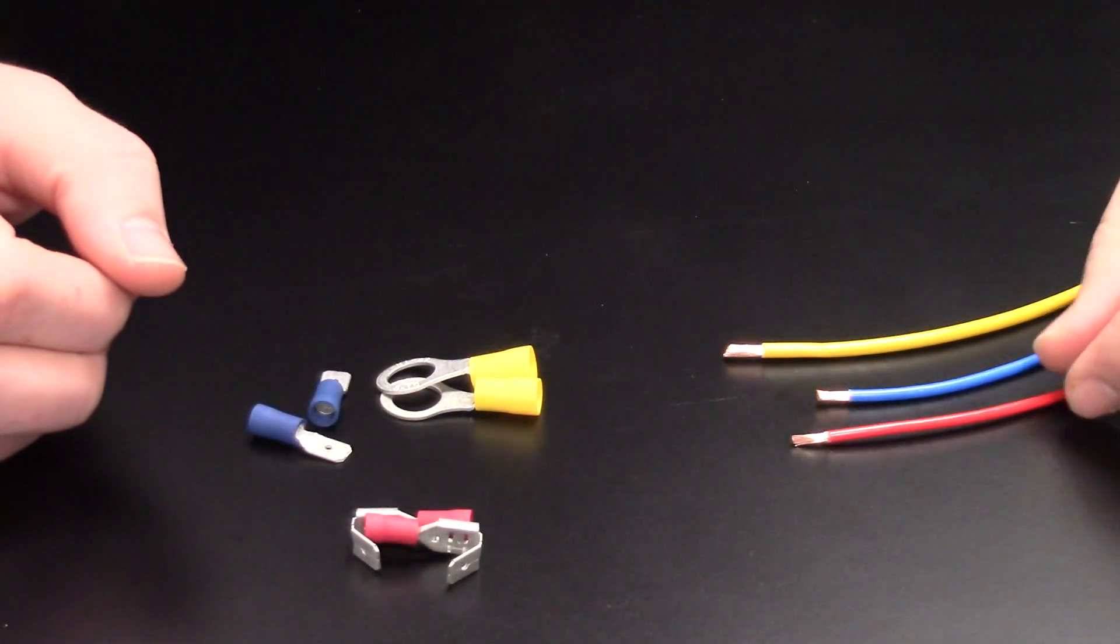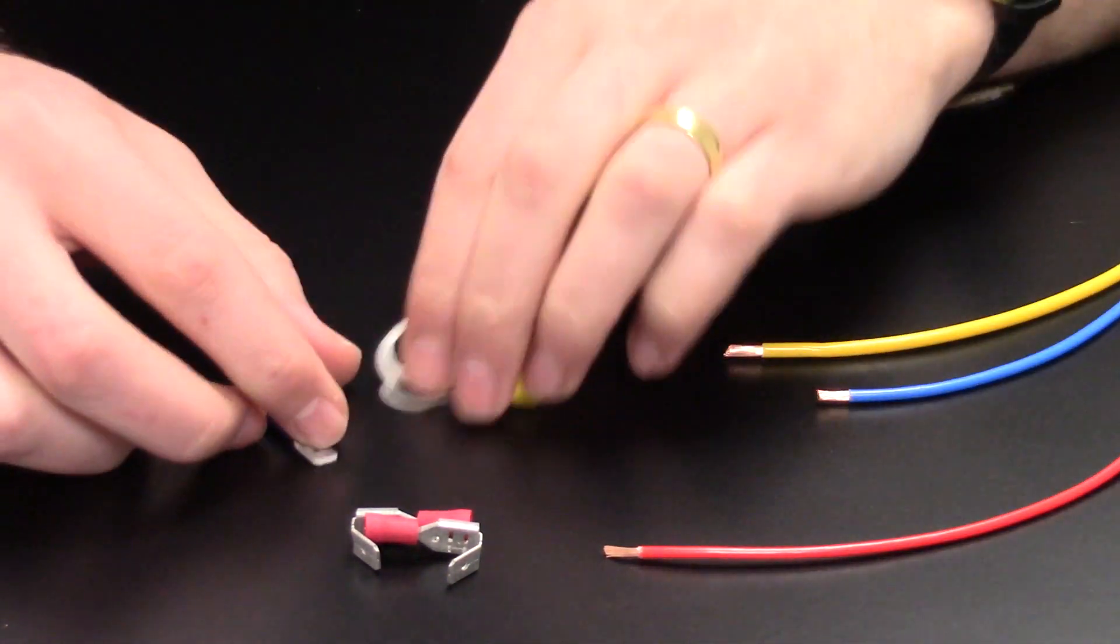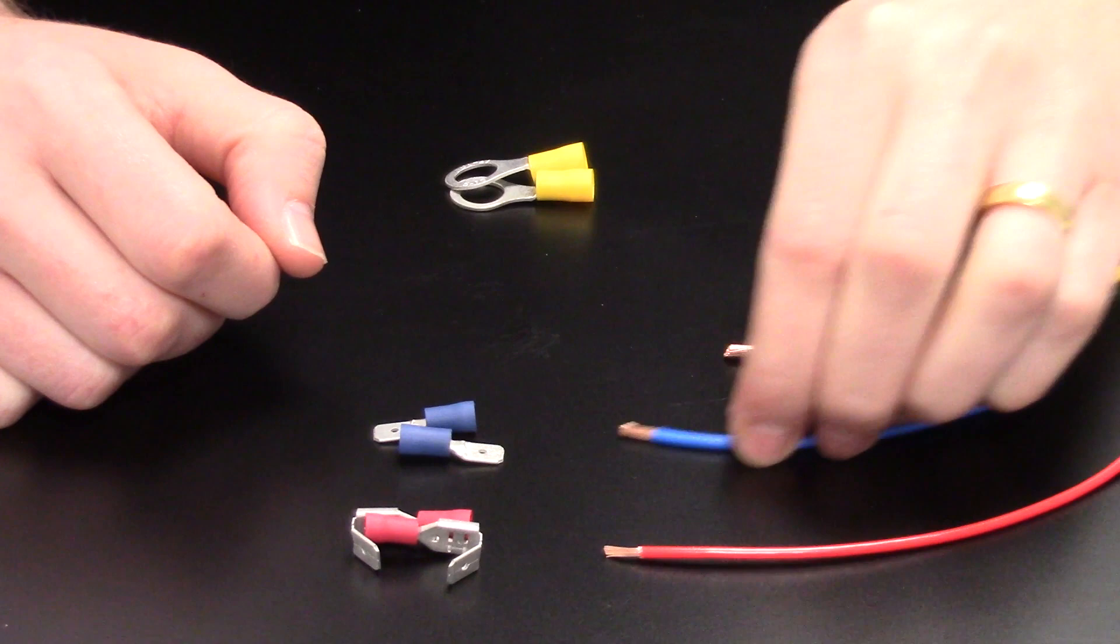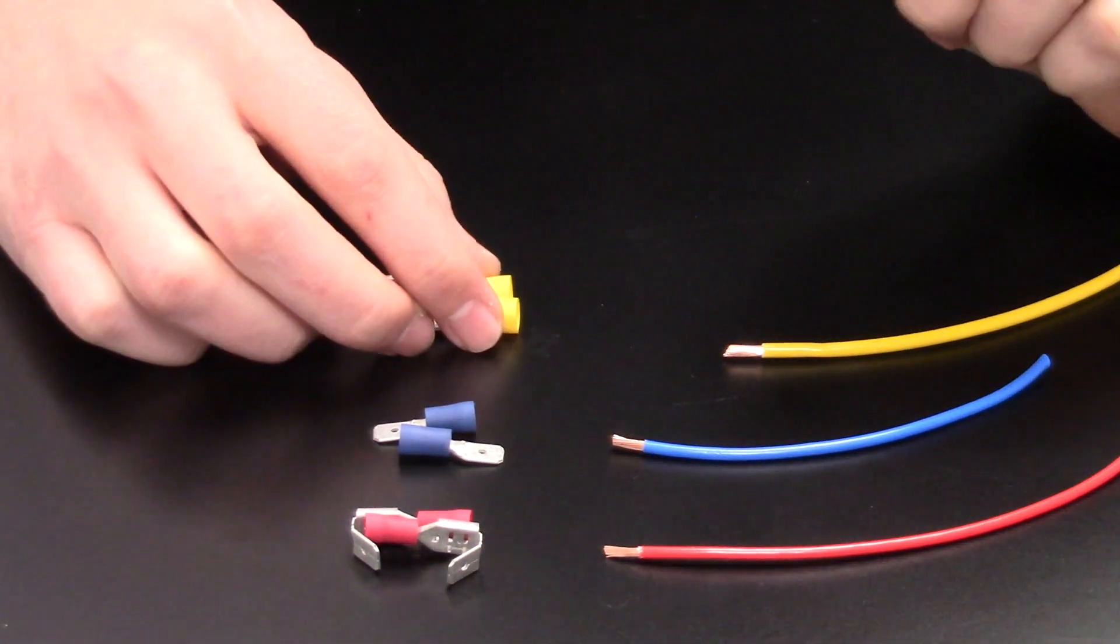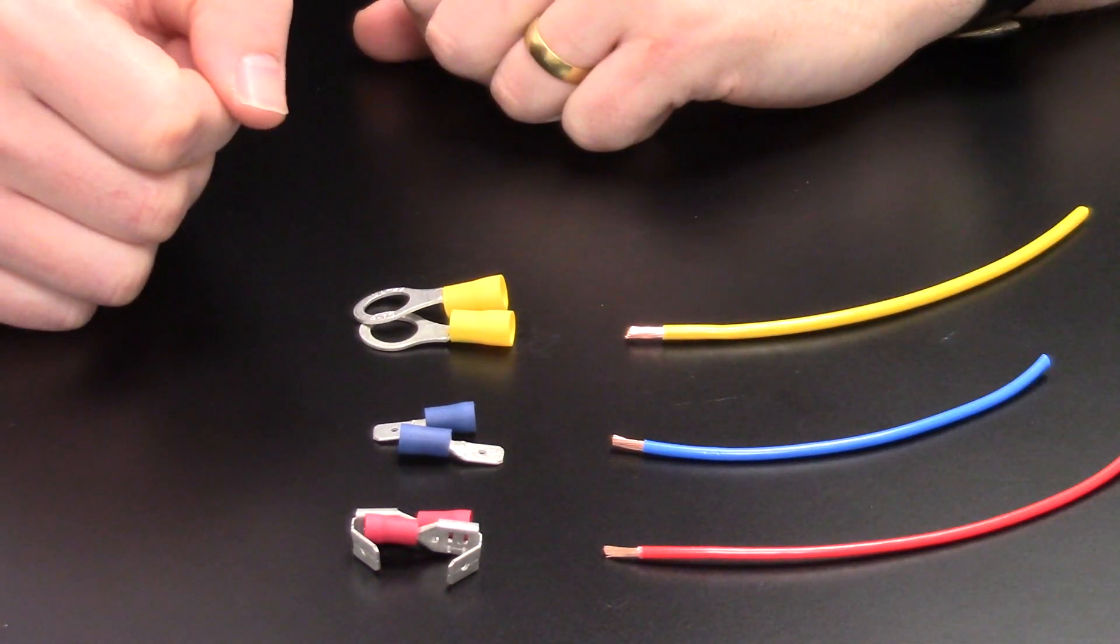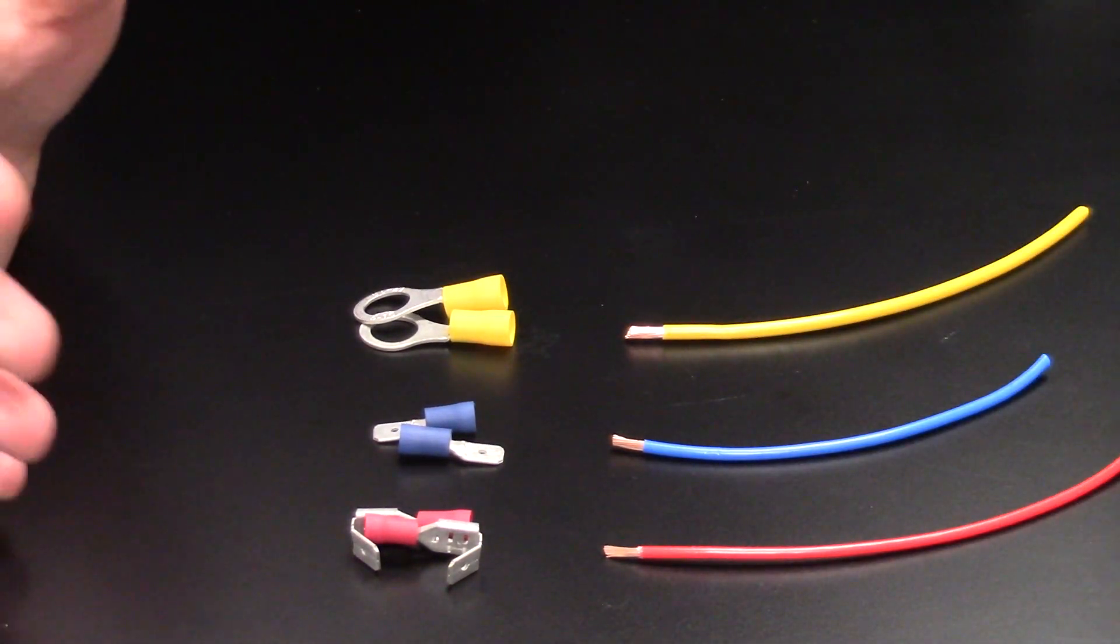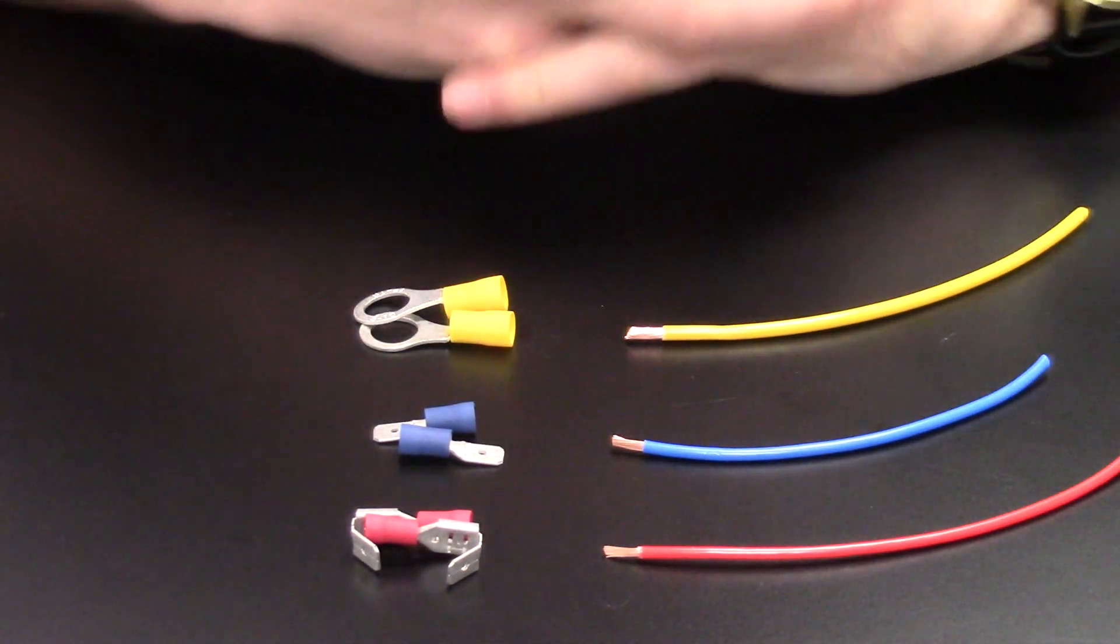The red terminals can be used with 0.5 to 1.5mm² cable. Our blue terminals are good for 1.5 to 2.5mm² cable. And yellow terminals are good for 3 to 6mm² cable. These colours are also found across the heat shrink adhesive line terminals to also help guide you.